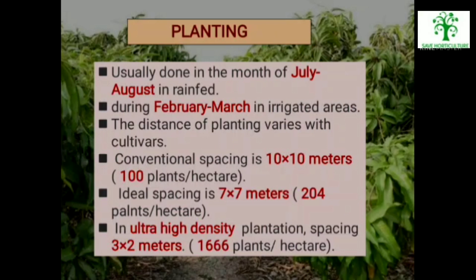Plantation is usually done in the month of July to August in rain-fed areas and during February to March in irrigated areas. The distance of planting varies with cultivars. Conventional spacing practiced in mango is 10 x 10 meters, which accommodates 100 plants per hectare. Ideal spacing is 7 x 7 meters, accommodating 204 plants per hectare. In ultra-high-density plantation, spacing of 3 x 2 meters is practiced, accommodating 1666 plants per hectare.